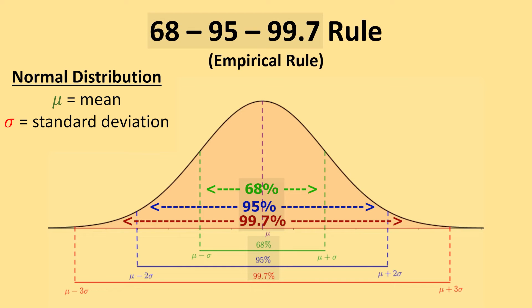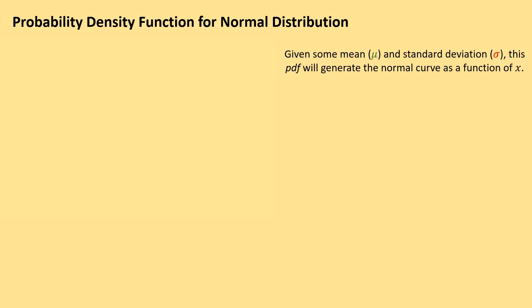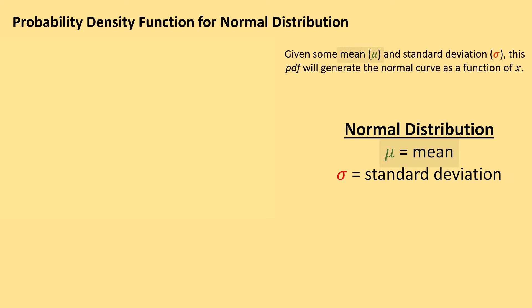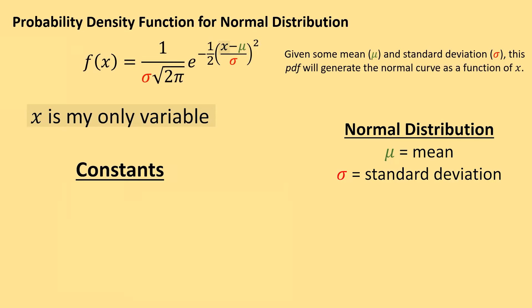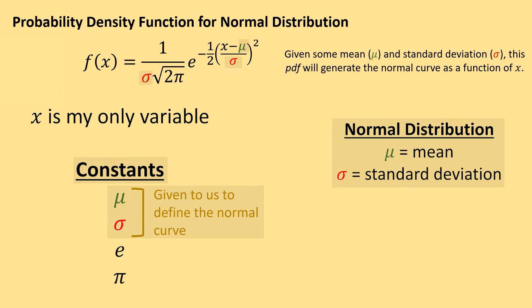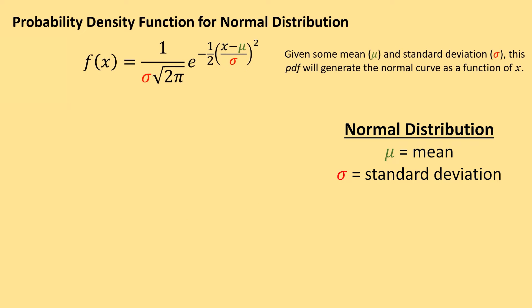So where do these numbers come from? Let's first talk about the function that defines the normal distribution. For any normal distribution, the mean is represented by mu and the standard deviation is represented by sigma. The function for the normal curve has only one variable, x. Mu, sigma, e, and pi are all numbers — mu and sigma will be given to us as our mean and standard deviation — and x is the only variable in this function. For any mu and sigma, I can plug them into this function to get the normal curve for that given normal distribution.